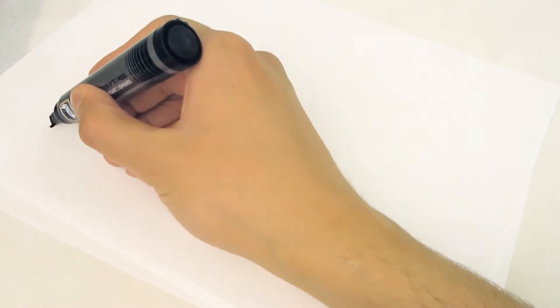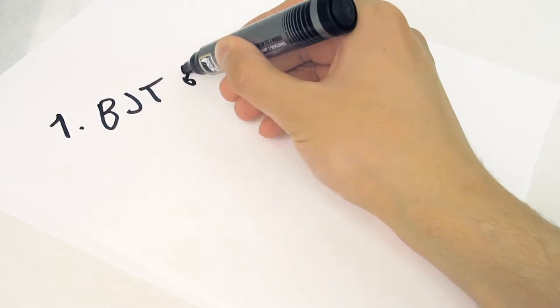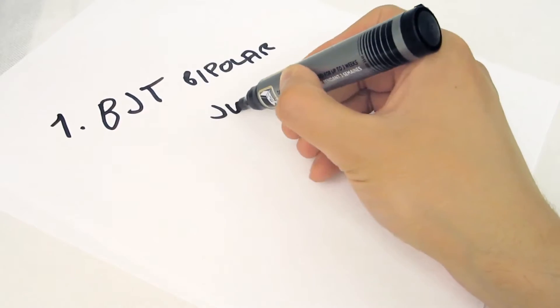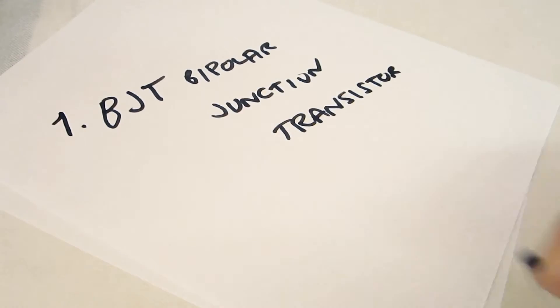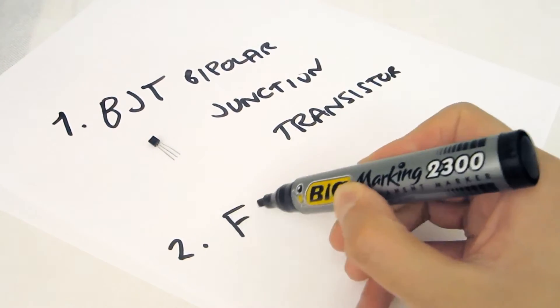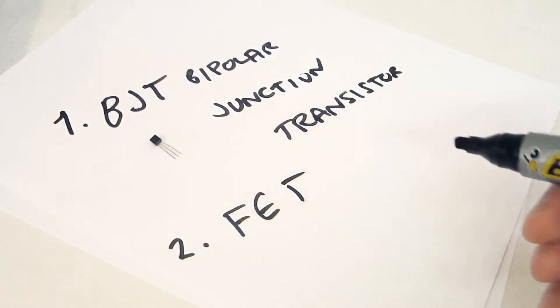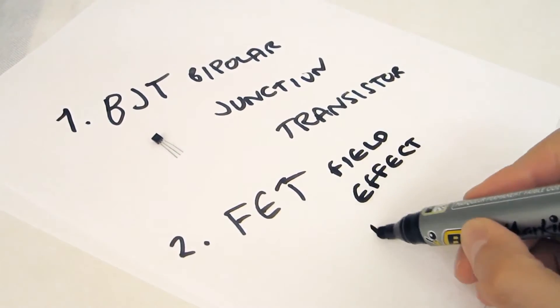Two major types of transistors you're likely to come across are these: the BJT, the bipolar junction transistor such as this, and number two, the FET or the field effect transistor.